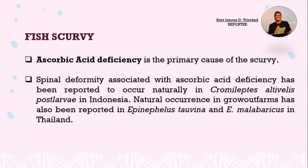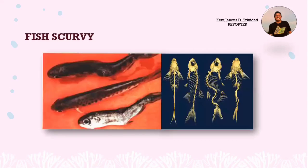The next example is fish scurvy. Ascorbic acid deficiency is the primary cause. Spinal deformity associated with ascorbic acid deficiency has been reported to occur naturally in Cromileptes altivelis post-larvae in Indonesia. Natural occurrence in grow-out farms has also been reported in Epinephelus fuscoguttatus and Epinephelus malabaricus in Thailand.